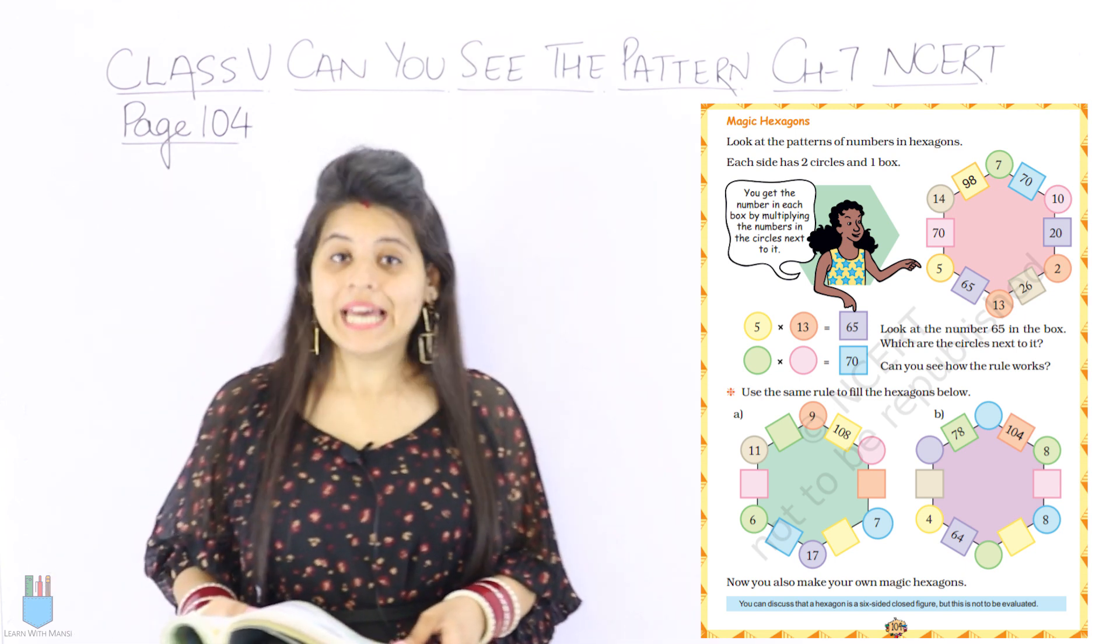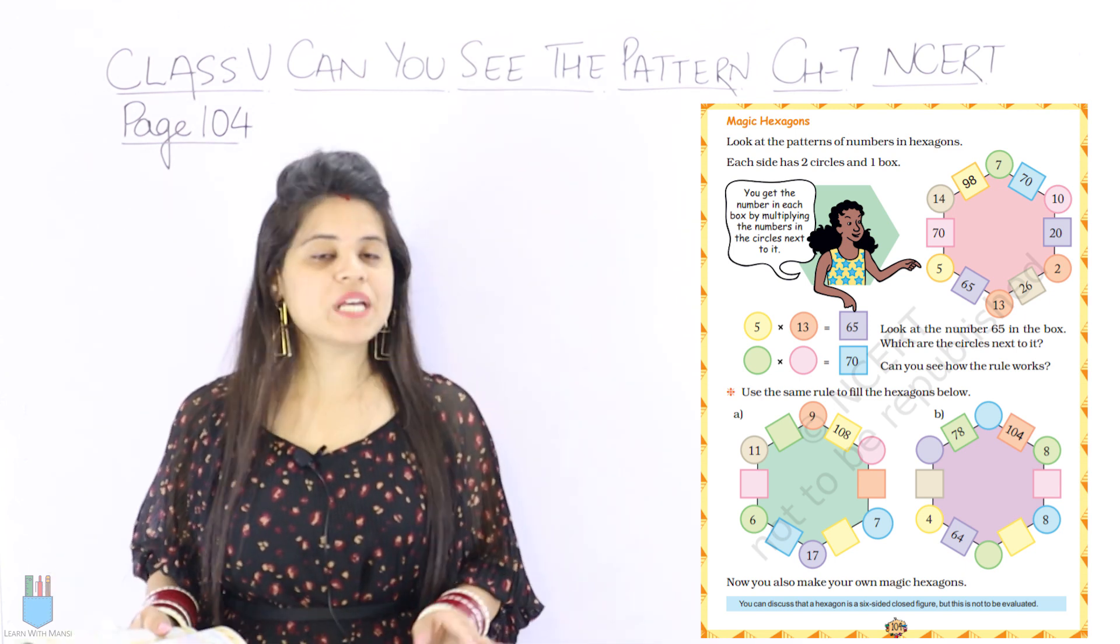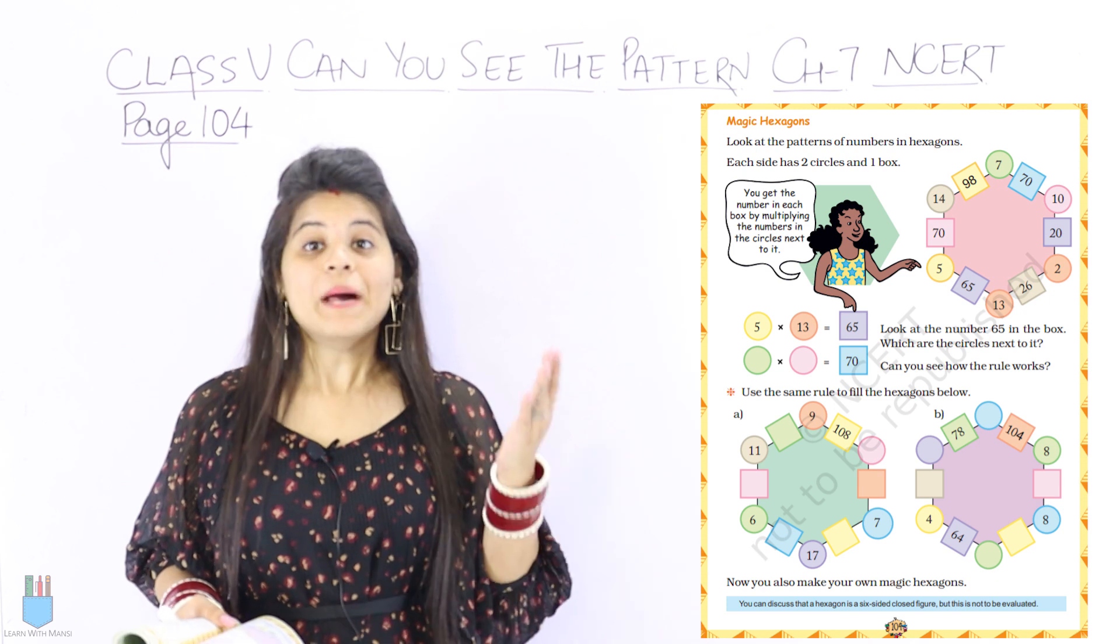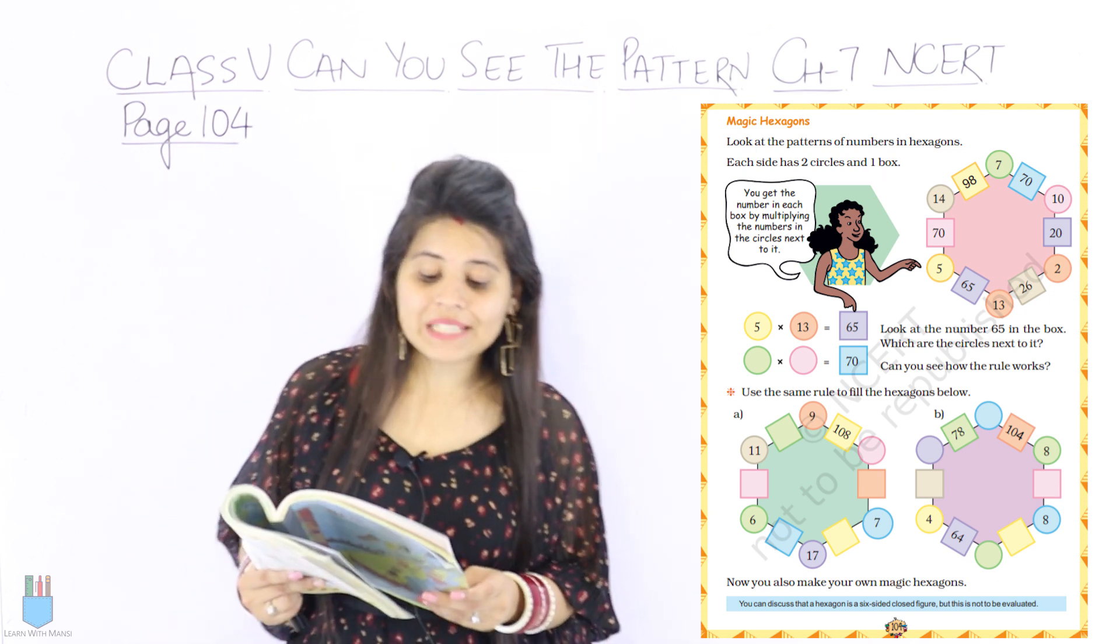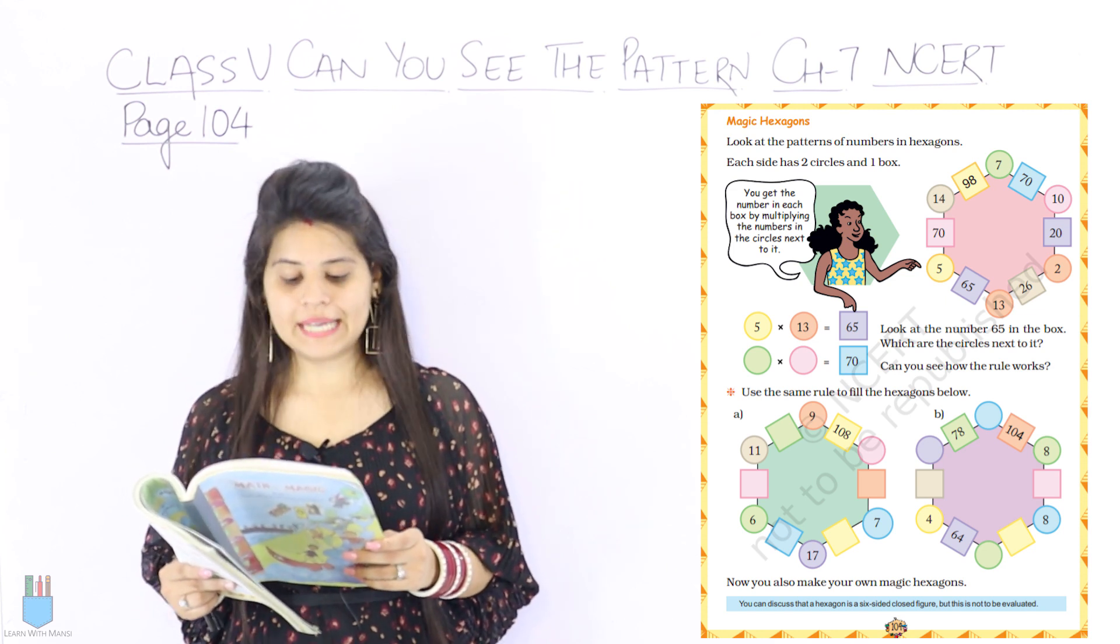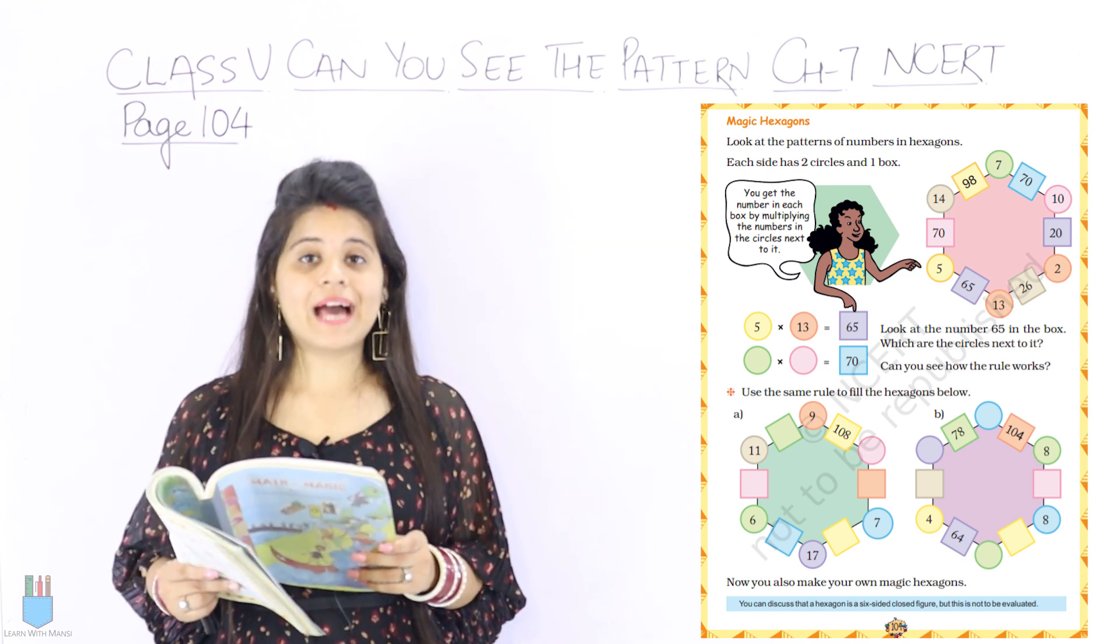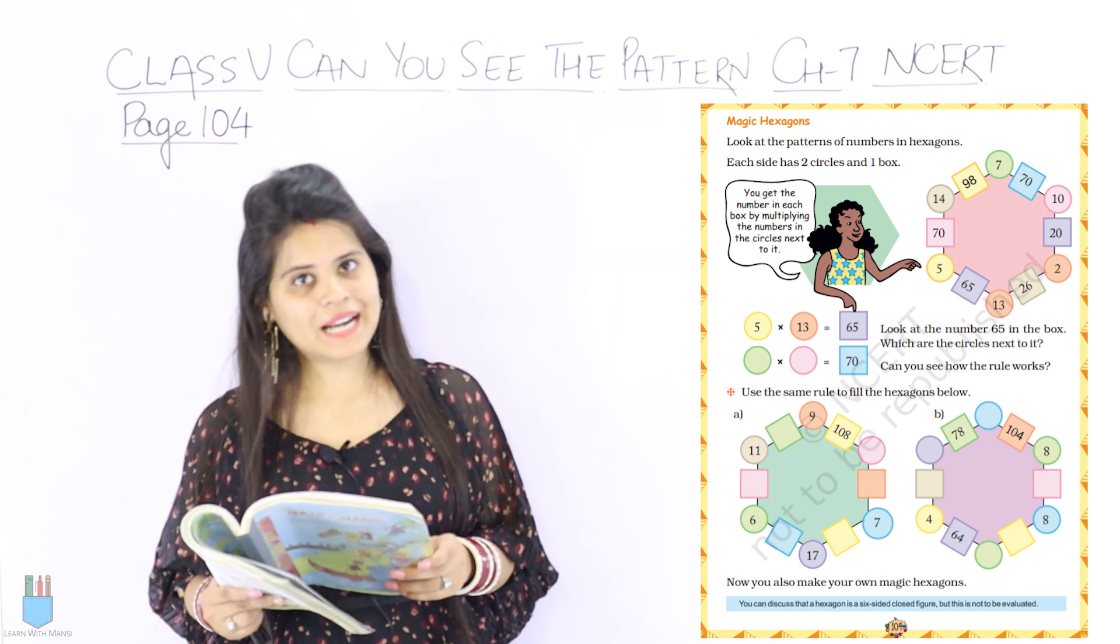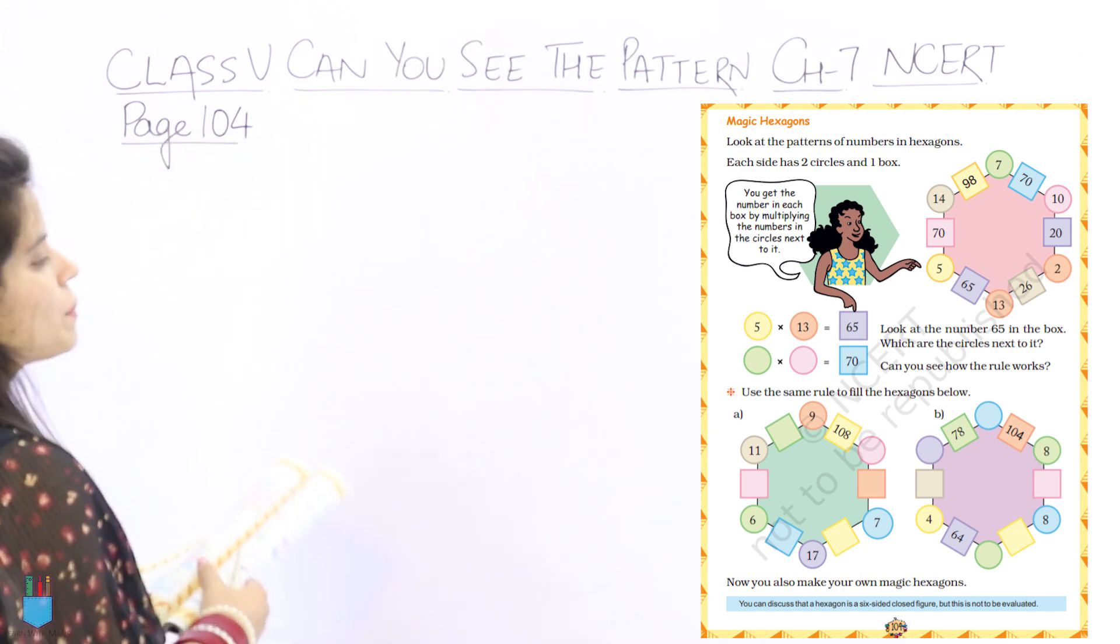So here our topic is magic hexagon. As you know, last page we had magic square in the end of the last page. So now magic hexagon. Look at the patterns of numbers in hexagons. Each side has two circles and a box. So this is the hexagon. You can also see in the picture.